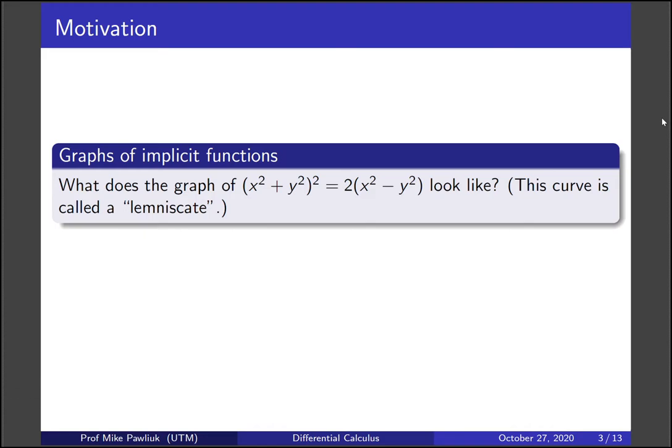Our motivation is, what does the graph of (x² + y²)² = 2(x² - y²) look like? This curve is called a lemniscate.